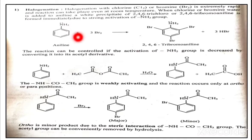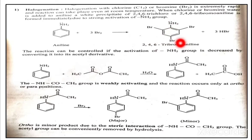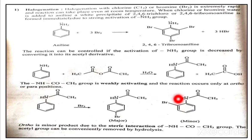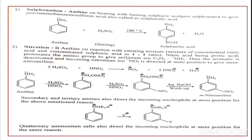To summarize halogenation: if the starting material is aniline and it undergoes bromination, we get 2,4,6-tribromoaniline; with chlorine, 2,4,6-trichloroaniline. This is an uncontrollable reaction. To control it, aniline is treated with acetic anhydride to give the acetyl derivative. The NHCOCH3 group is a weakly activating group, so the reaction takes place at the ortho and para positions, with para being the major product due to steric hindrance at ortho.